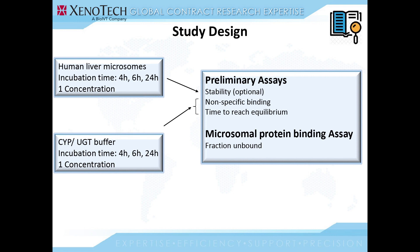The study is divided into two main parts: the prelim assay and the microsomal protein binding assay. In the prelim assay, we will determine the stability of the drug in the presence of the microsomes, the non-specific binding of the drug to the RED device, and the time required to reach equilibrium. We have three incubation periods — 4, 6, and 24 hours — which are typical, and we test one concentration of the drug. For the stability assay, there would be liver microsomes included. For non-specific binding and time to reach equilibrium, we would use CYP or UGT buffer depending on the requirements. Based on the prelim assay, we would determine what the equilibrium time is, and that is the incubation time which would be used for the microsomal protein binding assay.